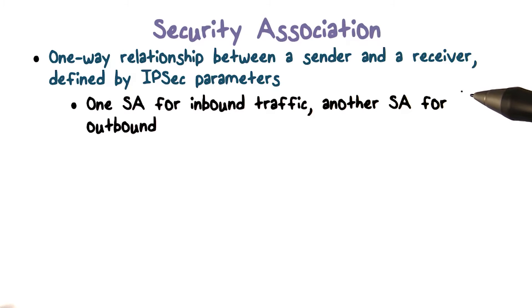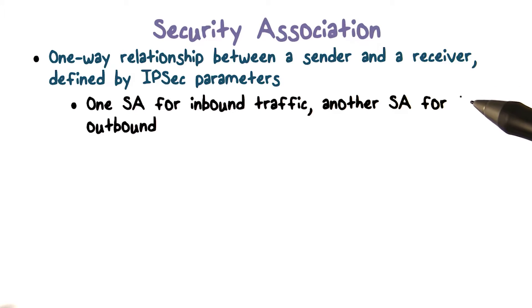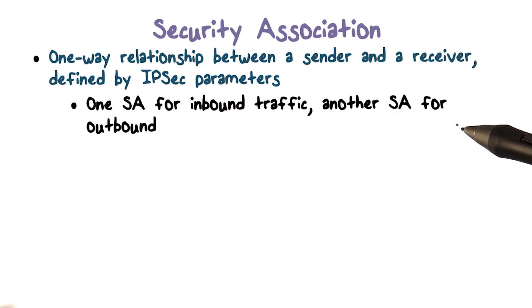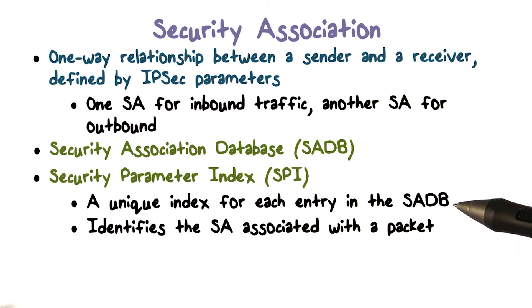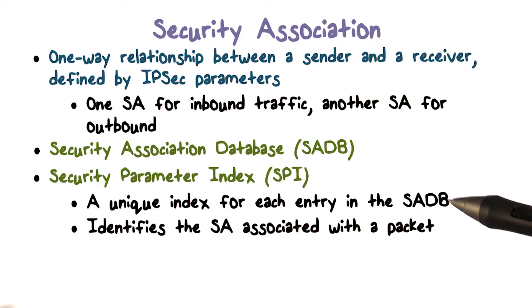A security association is asymmetric. For example, for a TCP connection from A to B, we need one SA for traffic from A to B, and another SA for traffic from B to A. An end host may need many SAs, and it uses an SA database to store them. Each SA has a unique index called the security parameter index, or SPI.